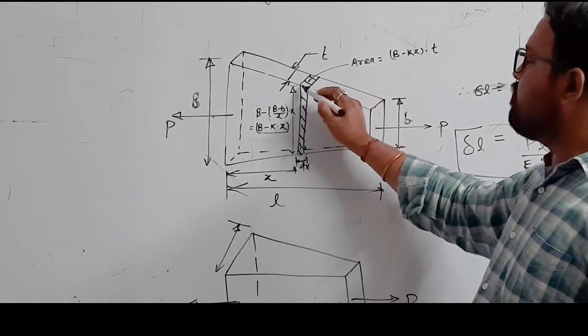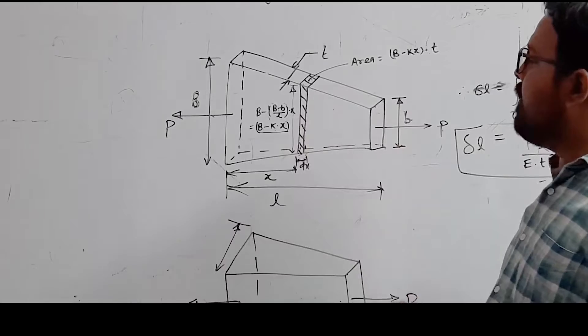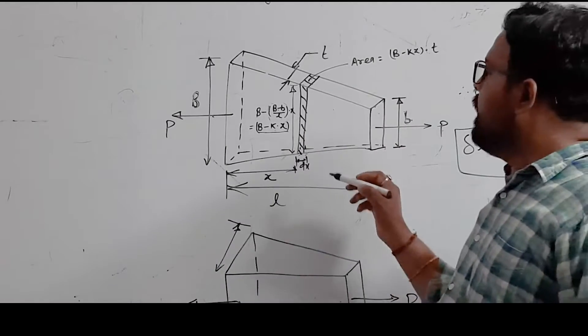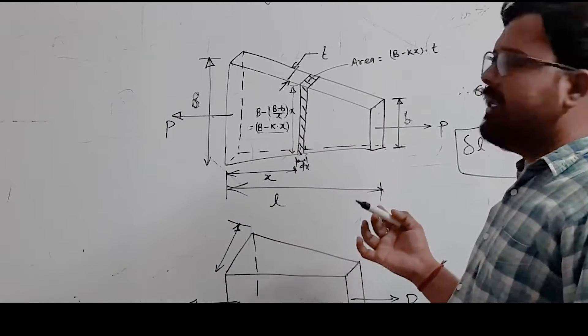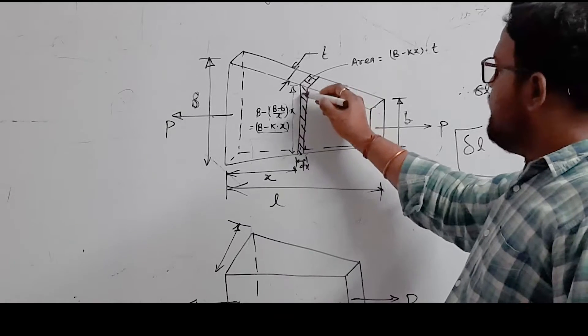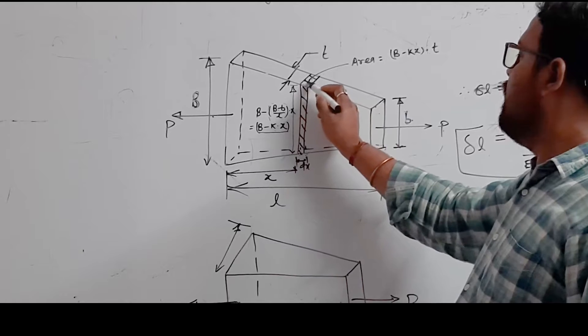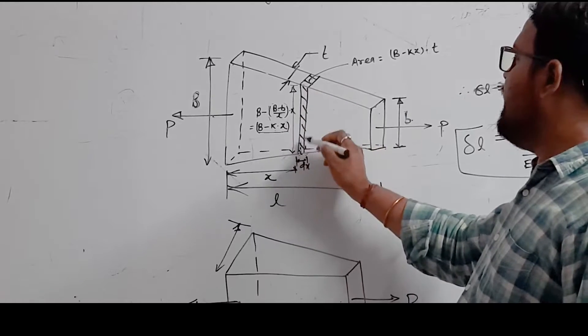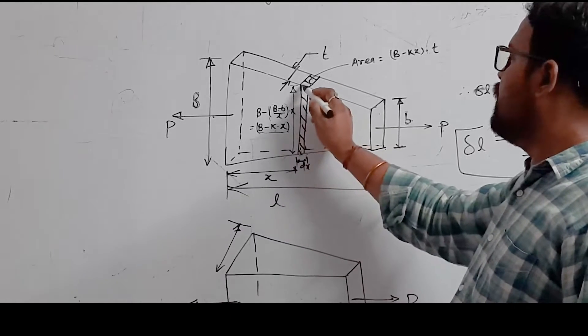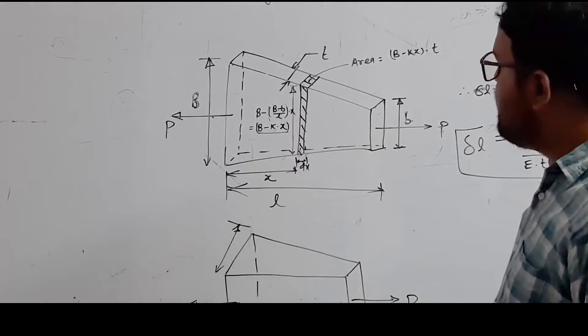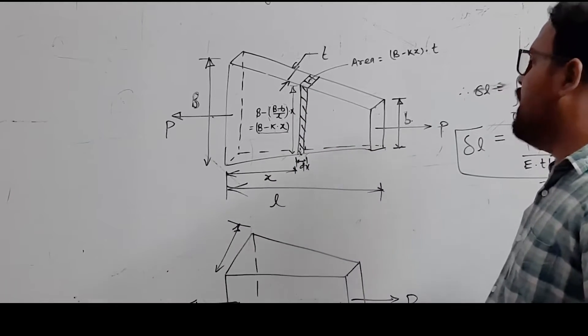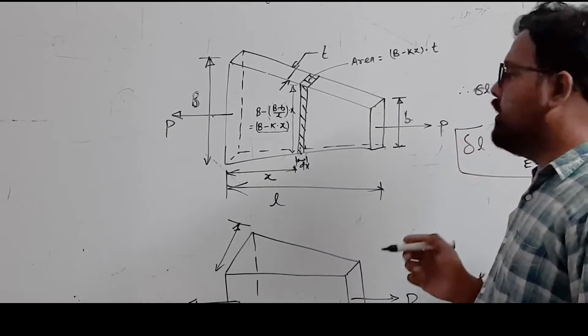So, what will be the area? Obviously, the cross-sectional area at the strip will be width times thickness. So the area will be (B minus kx) into T, where k represents the taper rate.